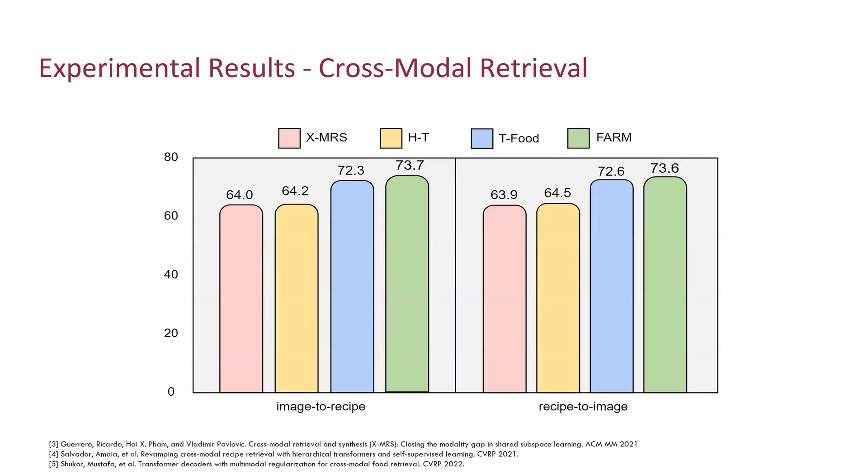We evaluated our model FARM using the Recipe 1M dataset. We compared FARM against several state-of-the-art baselines. Following previous works, we provided retrieval accuracy metrics R at 1, R at 5, and R at 10, which indicate the number of correct retrieved items given only the top K samples. We observed that FARM outperforms all baselines. More specifically, FARM outperforms the best baseline T-food by 1.4 on image-to-recipe tests and 1.0 in recipe-to-image tests.